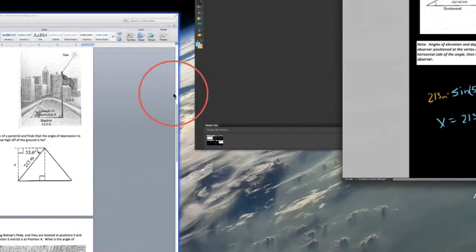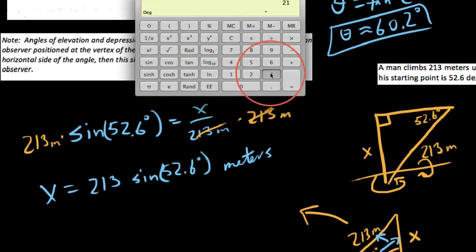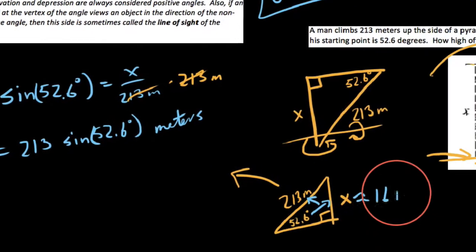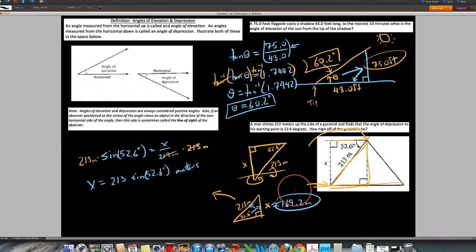Alright, so let's go ahead and pull out our calculator. So we have 52.6 of the sine of this, we take that times 213. So we get 169, now, notice that our original measurement, 213 meters, went on to the nearest whole number, let's go one extra place value, we'll go out one more, so we say 169.2. So we say x is approximately 169.2 meters, an entirely reasonable answer. So, a couple of examples with angles of elevation and depression.